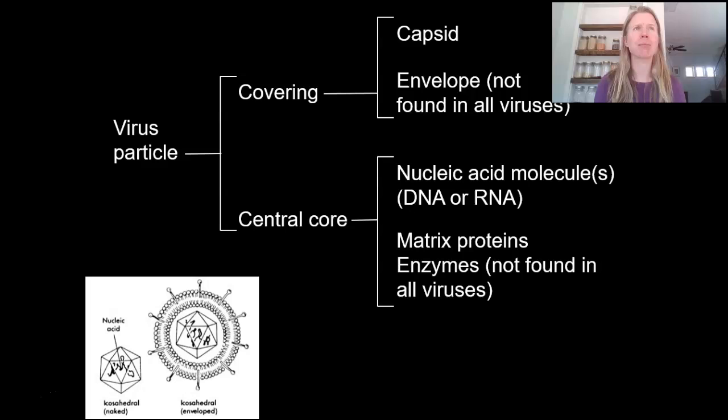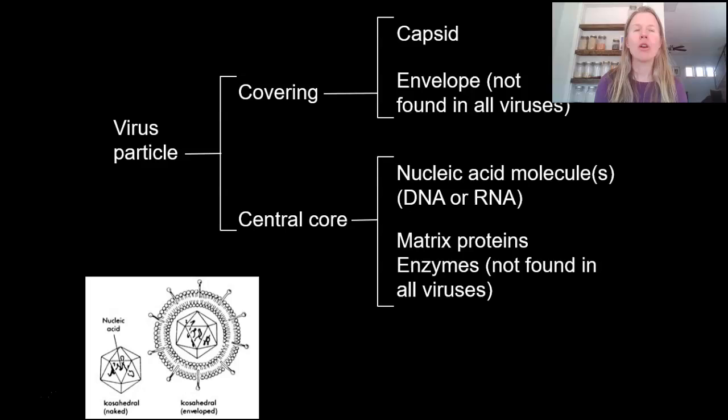Viruses carry genetic information, but not a lot. Humans have something like 20,000 genes, E. coli bacteria have about 2,000 genes, and HIV? Nine genes. It really only carries genes for things it absolutely needs — everything else it lets the host cell take care of.